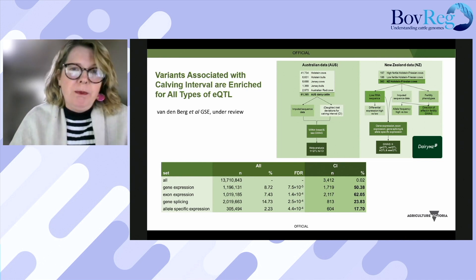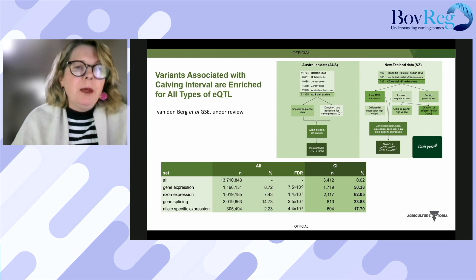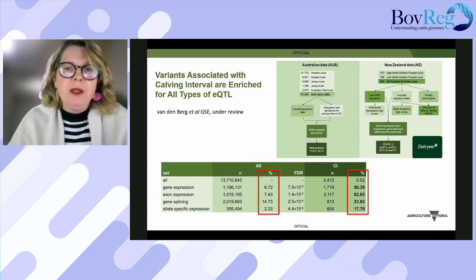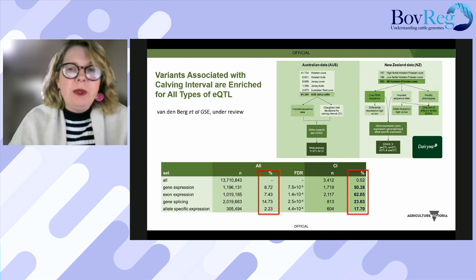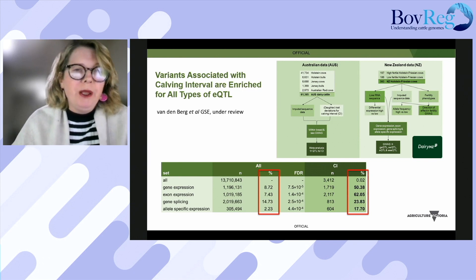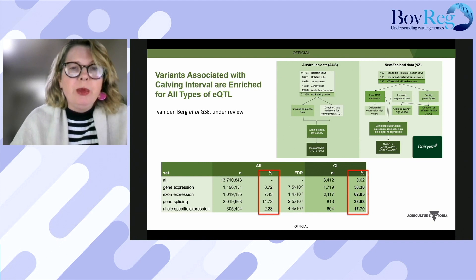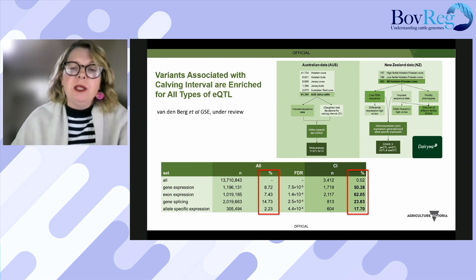She's done expression QTL mapping for all the expression QTLs we're interested in. For all four expression QTL types — gene expression, exon expression, allele-specific expression, and splicing — the variants that are QTL for calving interval are significantly enriched in all expression QTL types compared to the entire genome. For example, 8% of variants genome-wide are significant gene expression QTL, but 50% of the calving interval QTL are gene expression QTL — a pretty significant enrichment.